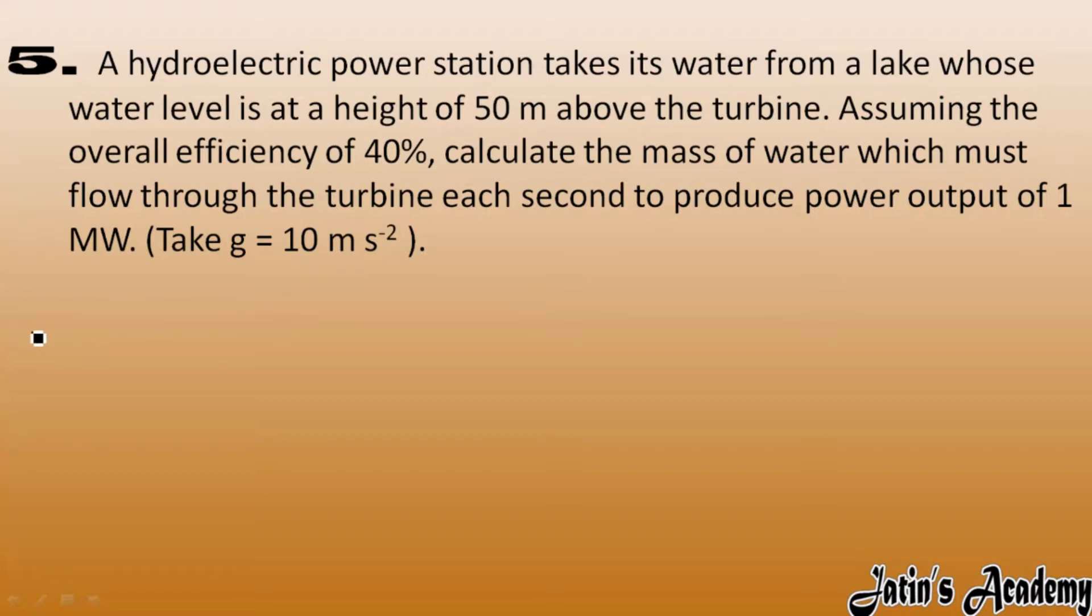For example, a lake is there which is 50 meter above the level of a turbine and falls on the turbine. So now the overall efficiency of system is given as 40 percent and power output is given as 1 megawatt.